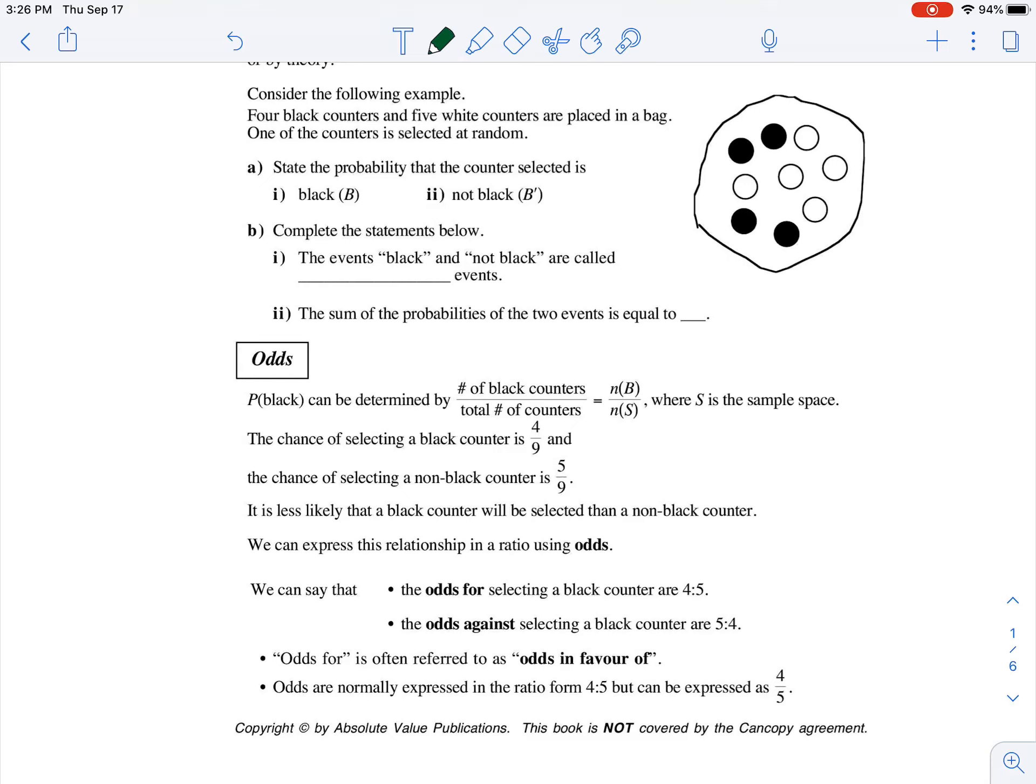Four black counters and five white counters are placed in a bag. One of the counters is selected at random. State the probability that the counter selected is black.